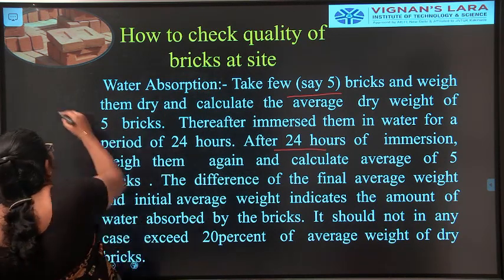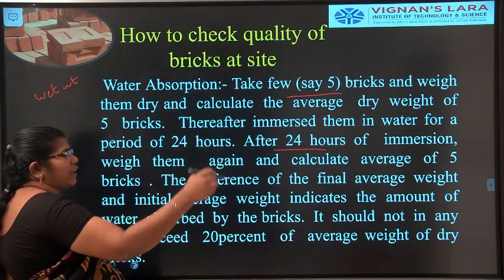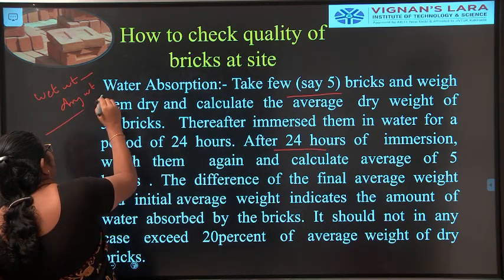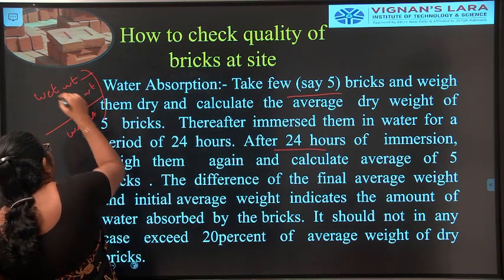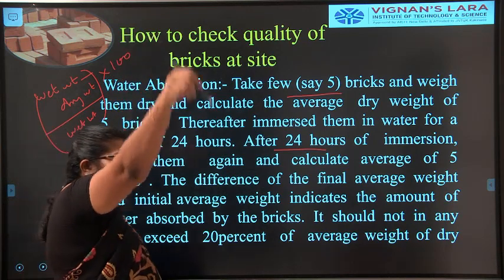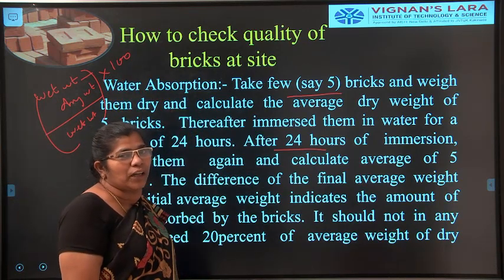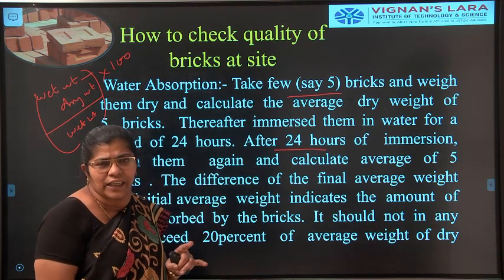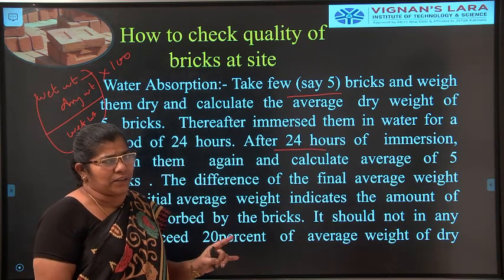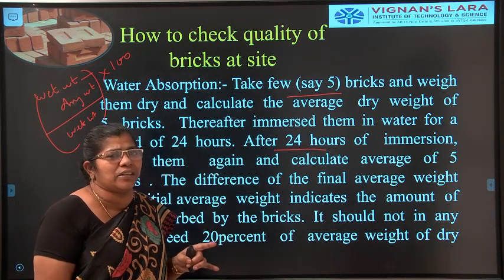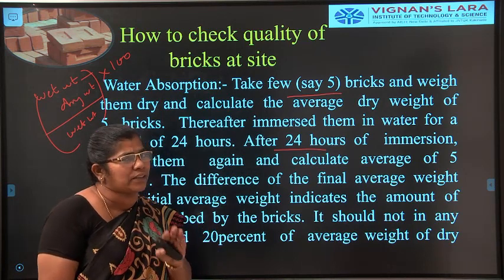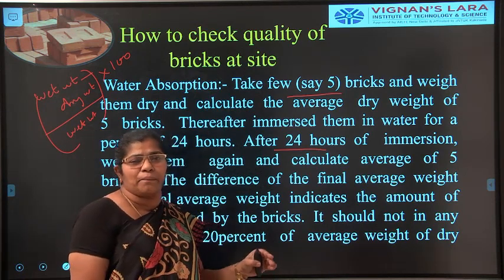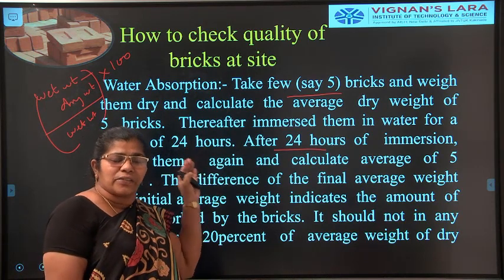The wet weight is obtained after 24 hours of immersion, and the formula is: wet weight minus dry weight, divided by wet weight, into 100. Bricks should not absorb more than 20% of moisture. IS code 1107 is used for determining brick properties, but it mainly focuses on ordinary clay bricks, not fly ash or autoclave concrete blocks.